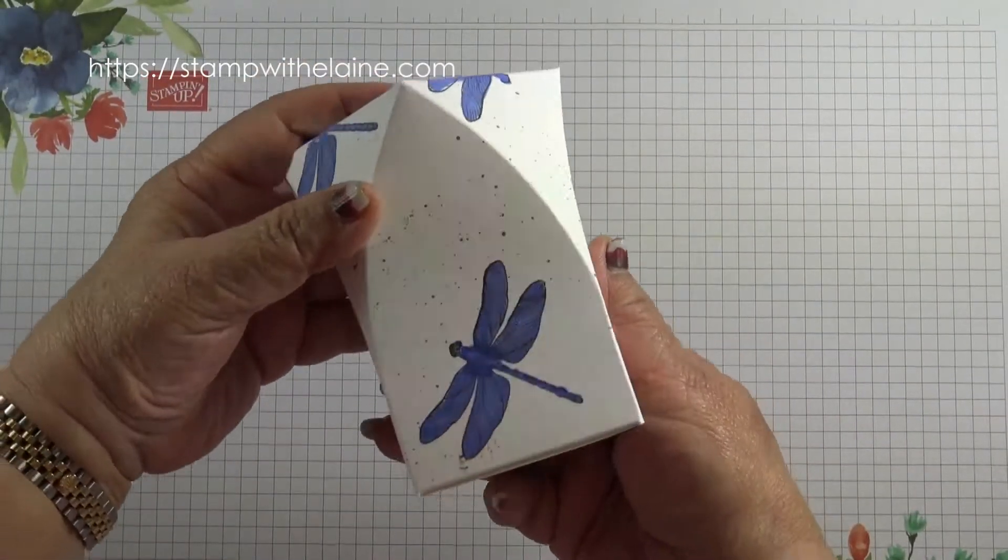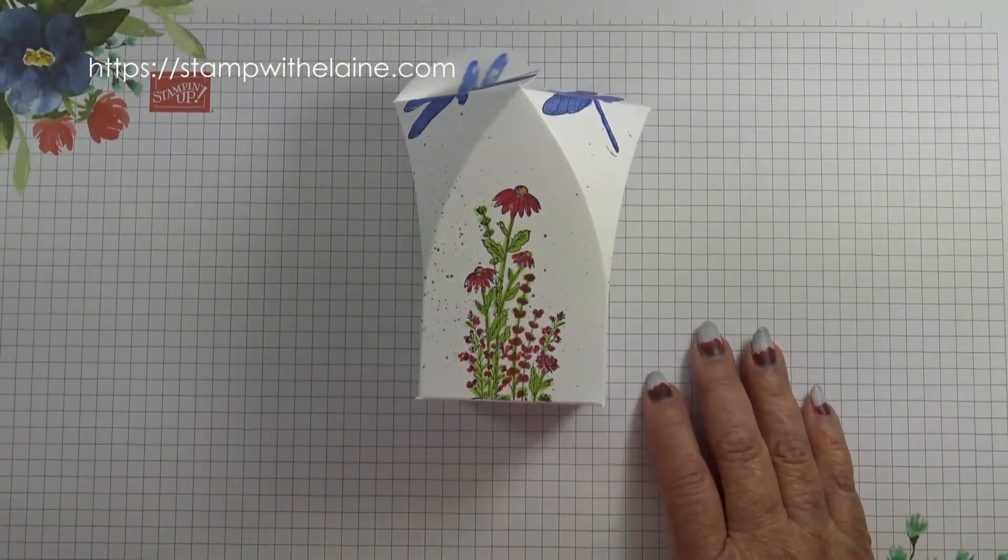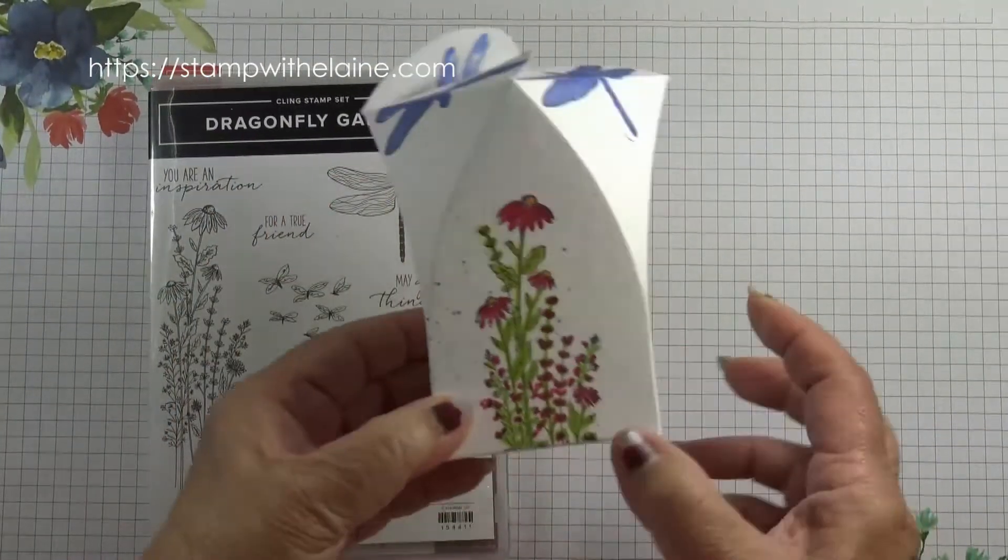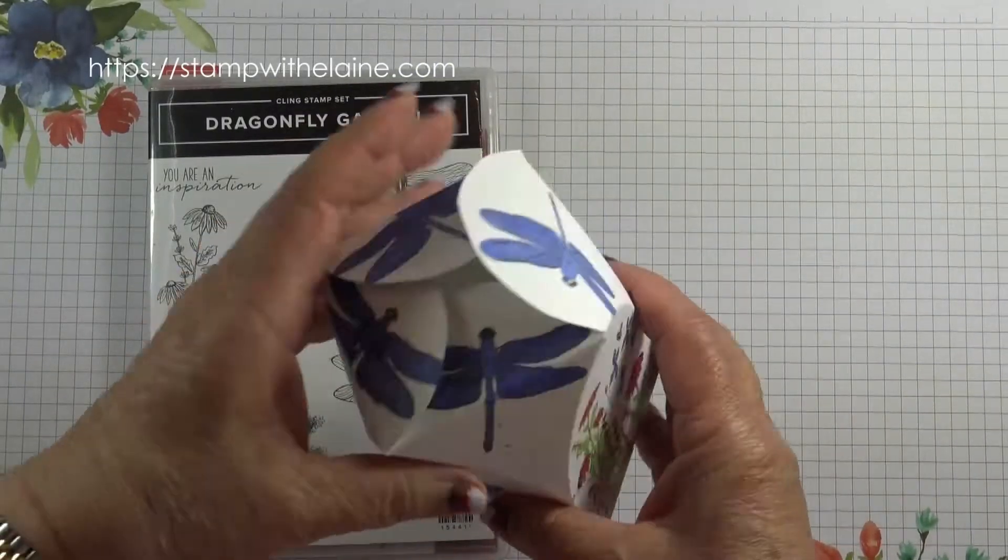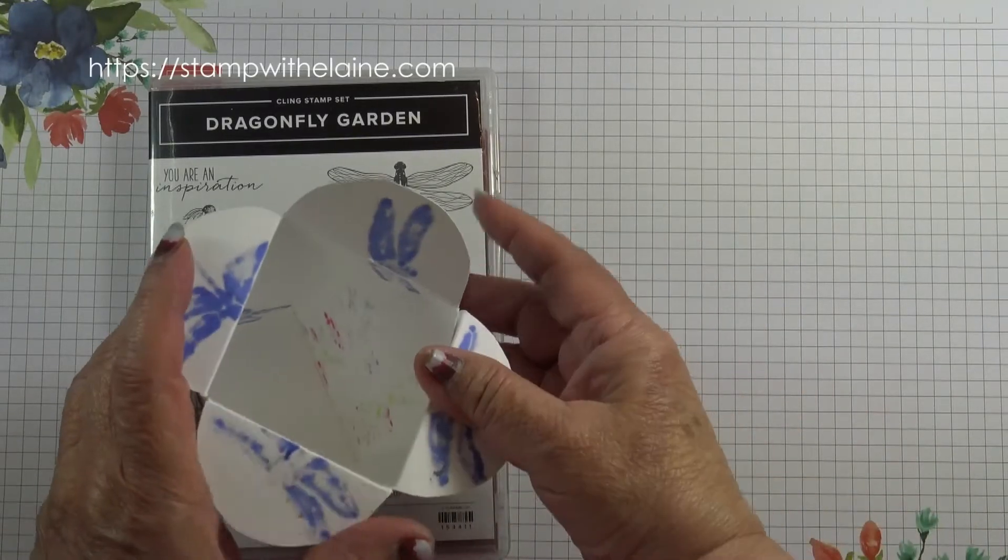This was my prototype. I made it with the dragonfly garden stamp set and colored it with the new in colors, but unfortunately this is what happened - it bled.